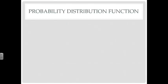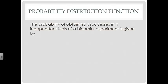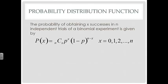Let's take a look at the probability distribution function. The probability of obtaining X successes in N trials uses combinations from our probability chapter. P(X) equals N combination X, times the probability of success raised to the power X, times the quantity one minus that probability raised to the power of N minus X — the number of failures. You do this for all X values from zero up to N.